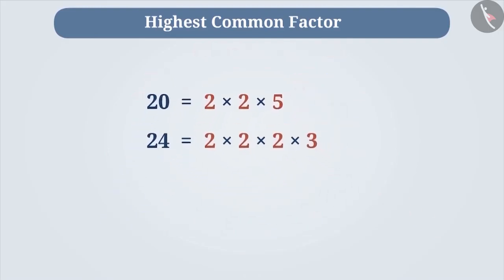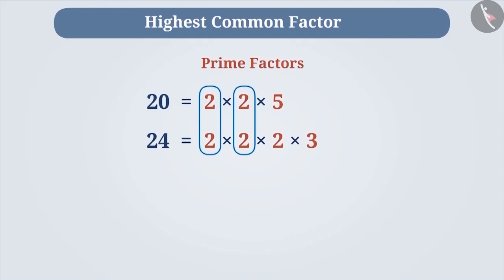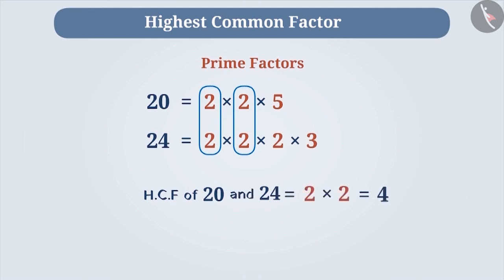Now check for the common factors among the prime factors of these two numbers. As you can see, 2 is repeating twice among the prime factors of 20 and 24. There is no other common factor between the two. Therefore, the HCF of 20 and 24 is 2 × 2 = 4.